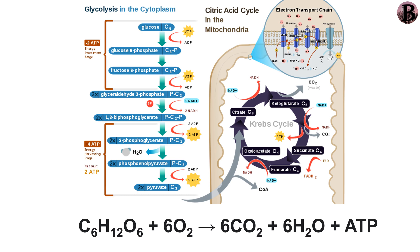During cellular respiration, a glucose molecule is gradually broken down into carbon dioxide and water. Along the way, some ATP is produced directly in the reactions that transform glucose, but much more ATP is produced later in a process called oxidative phosphorylation.